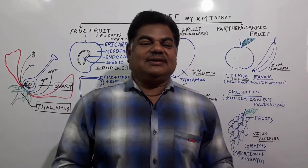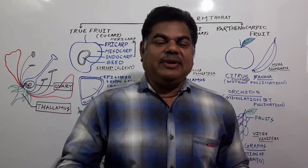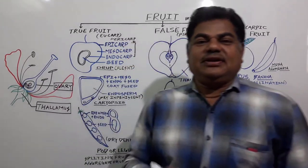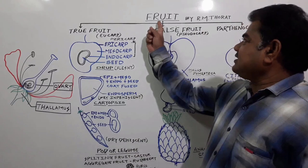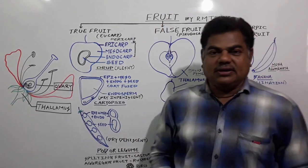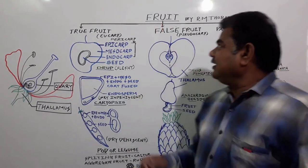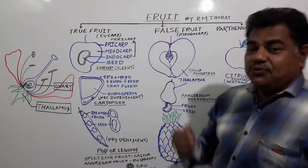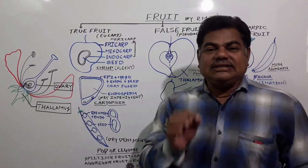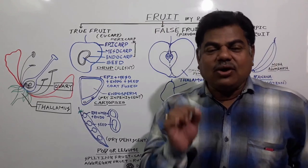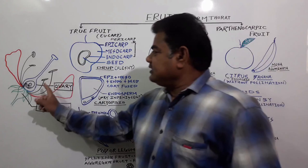Welcome students, welcome to Ultimate Biology. Today we discuss a new topic: the fruit. A fruit is nothing but a ripened ovary.